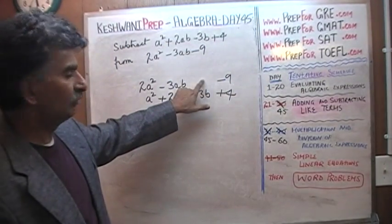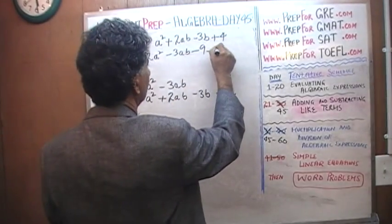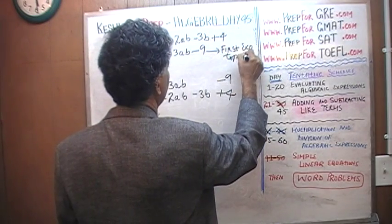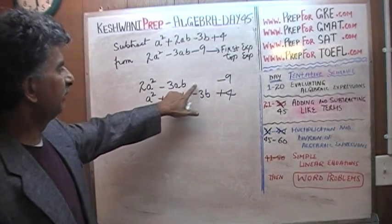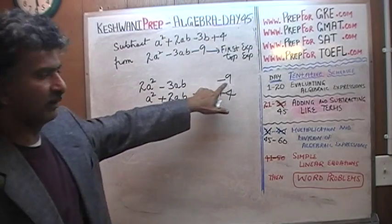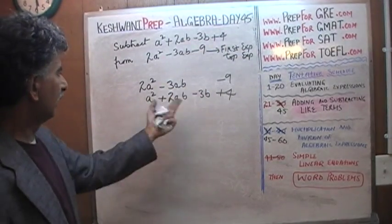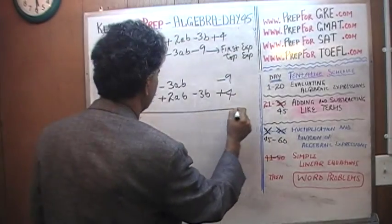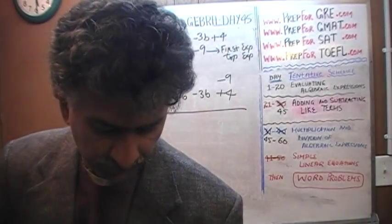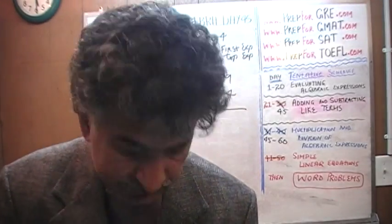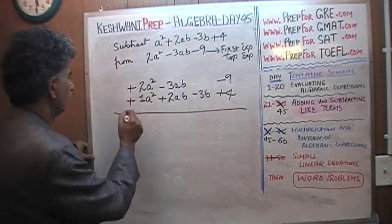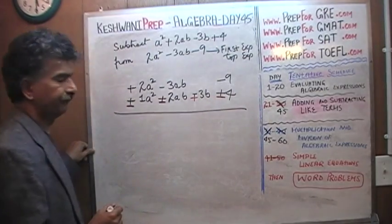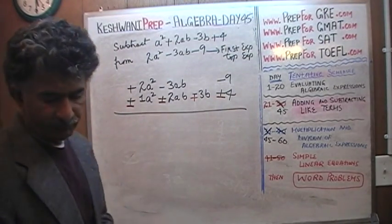Now the terms line up. There is no standalone b in the top expression — it has a squared, ab, and a constant, but no lone b — so there is room for alignment. Now, in order to actually do the subtracting, we take the bottom expression and change the sign of every single term. This positive becomes negative, this positive becomes negative, this negative becomes positive, and this positive becomes negative.